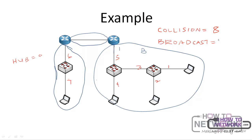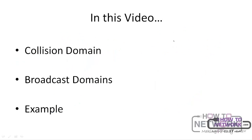I urge you to go ahead and try out more examples for yourself and see if you can identify the number of collision domains and broadcast domains in a network diagram. In this video we were able to look at collision domains and what they mean, examine the types of messages — unicast, multicast, and broadcast — examine broadcast domains and why we have them, and look at a live example where we identified the number of collision domains and broadcast domains in a network. Thank you very much for watching this video.